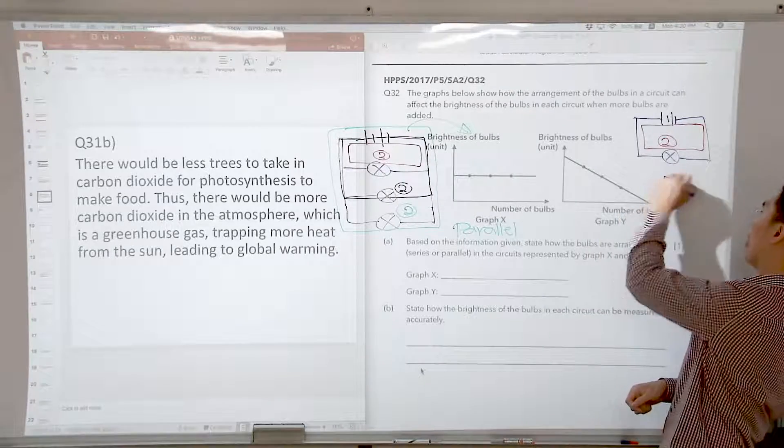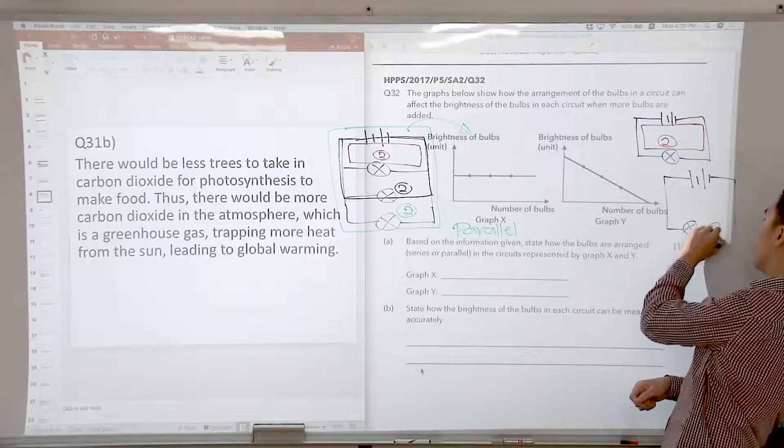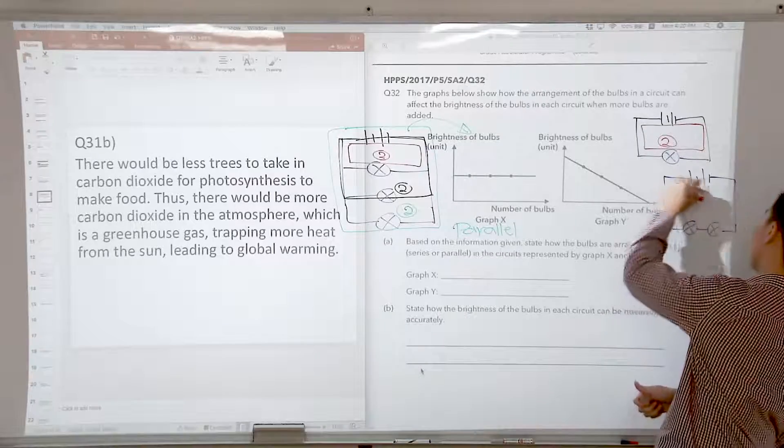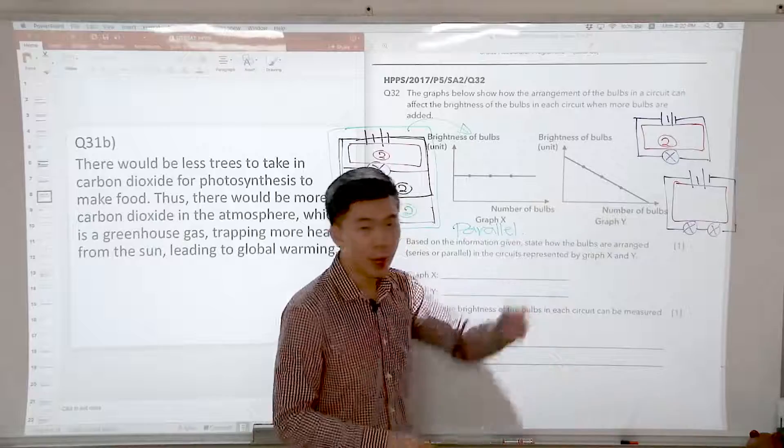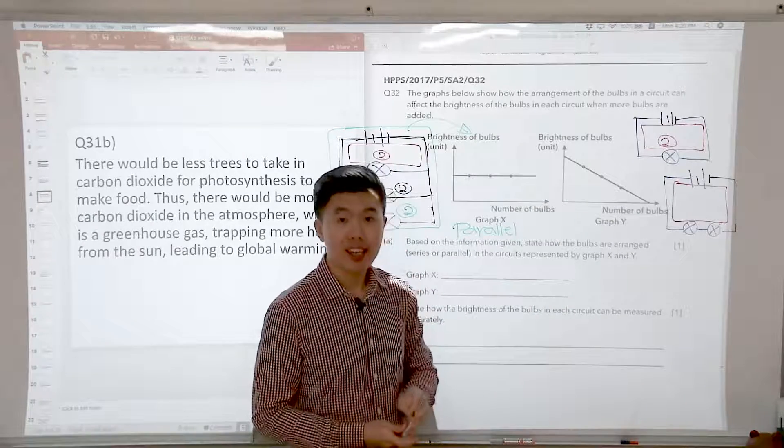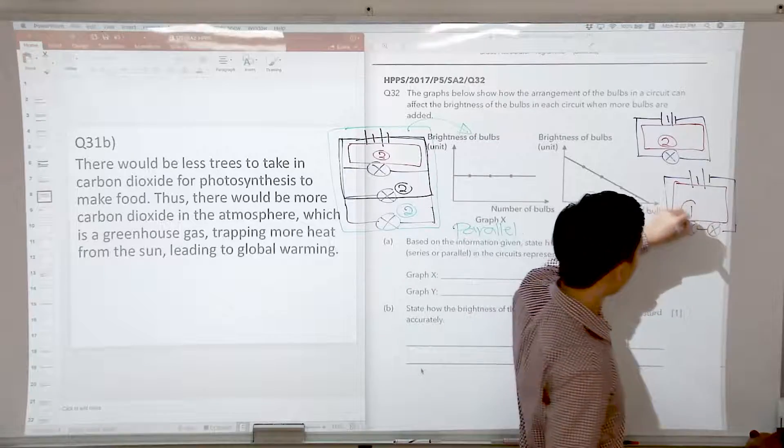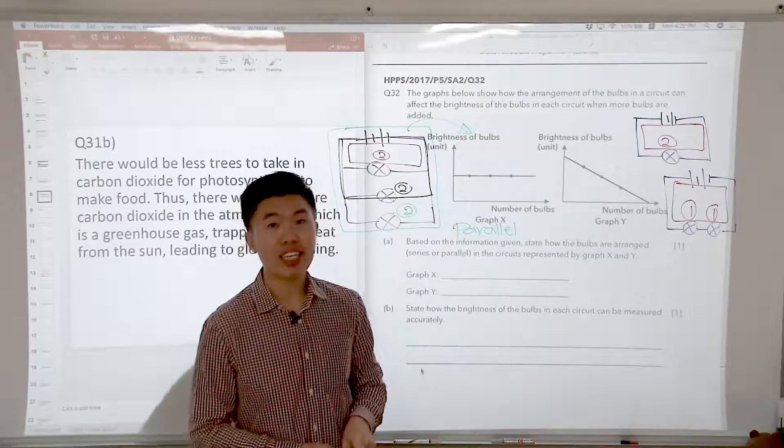But what happens now if we were to give two batteries and two bulbs in series? Right, in this circuit here, we'll have two batteries, two bulbs. Do they need to share? Yes, they need to share. So two divided by two, each one will get a power of one. What can you tell me about the brightness? The brightness decreases.